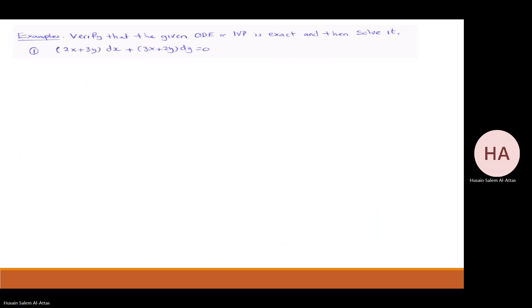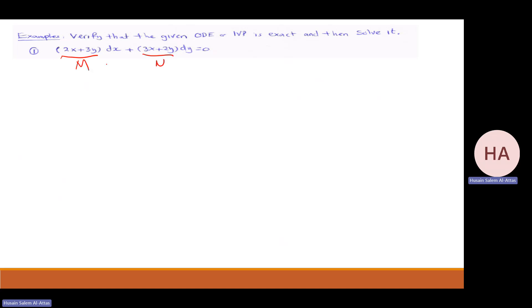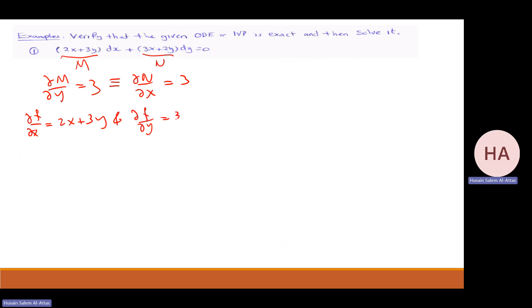2x plus 3y. This is m, this is n. Partial m with partial y gives me 3. Partial n with partial x also gives me 3. So they are equal — so I have partial f with partial x equal to 2x plus 3y, and partial f with partial y equal to 3x plus 2y. So this is exact.